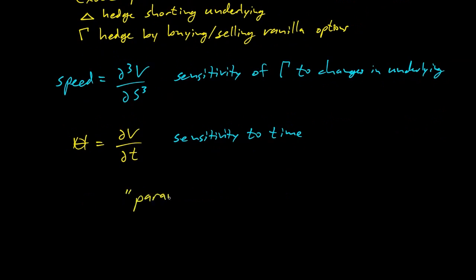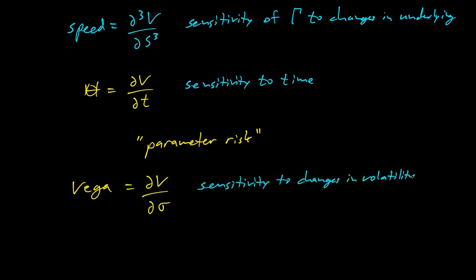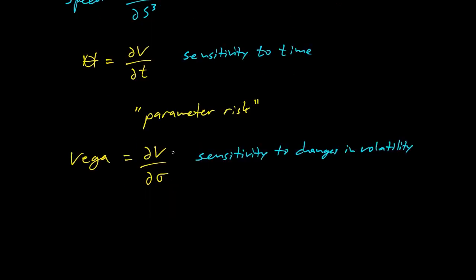Vega — not actually a Greek letter — is the change of V with respect to volatility, the sensitivity to volatility. This is a bit unusual because volatility is a parameter of the Black-Scholes model. But if we change volatility, the current value of the option changes, and plotting vega shows how much risk we have from using the wrong volatility. One caveat: this only makes sense if gamma has a single sign — all positive or all negative. If gamma changes sign, vega loses its useful interpretation.